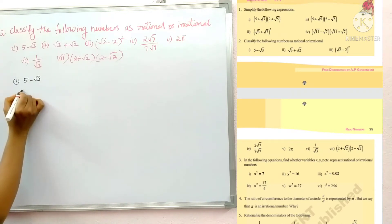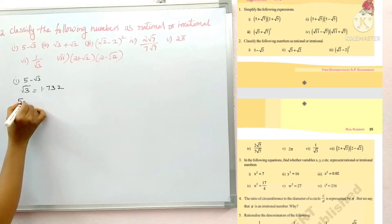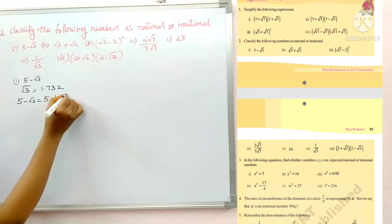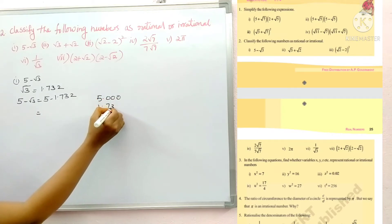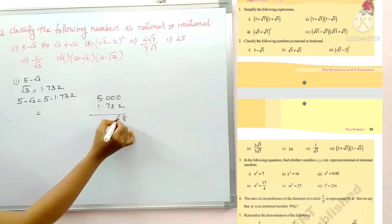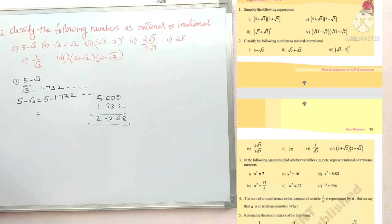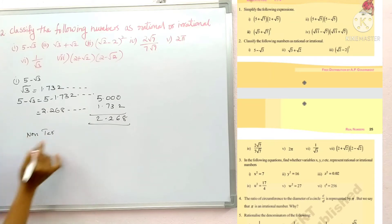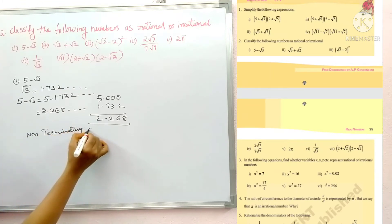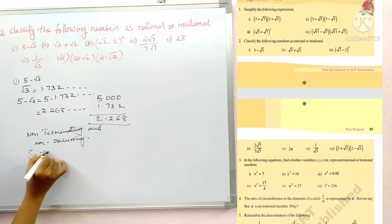We can verify by calculation: root 3 equals 1.732, so 5 minus root 3 equals 5 minus 1.732. After subtracting, you get 3.268 and so on — this is non-terminating and non-recurring, so this is an irrational number.